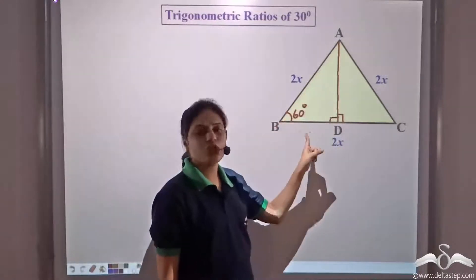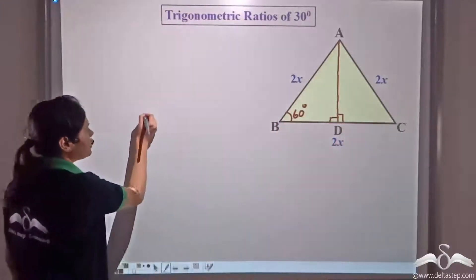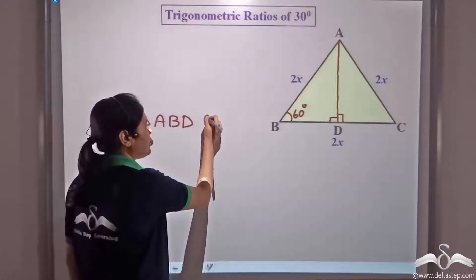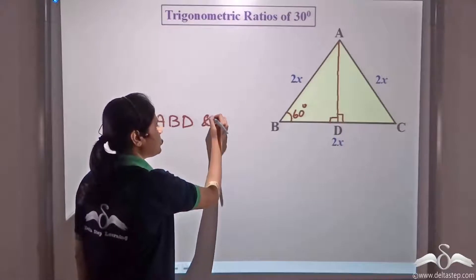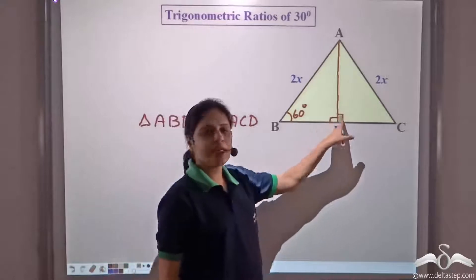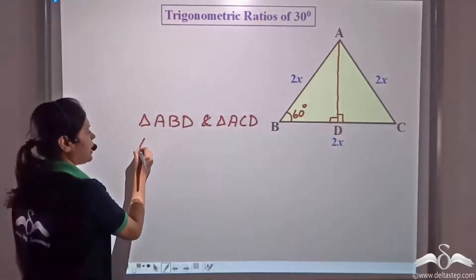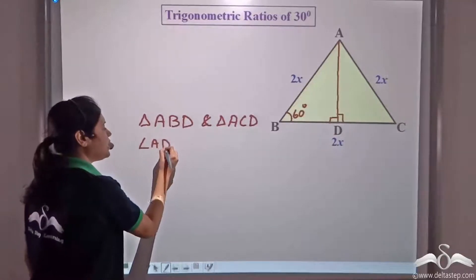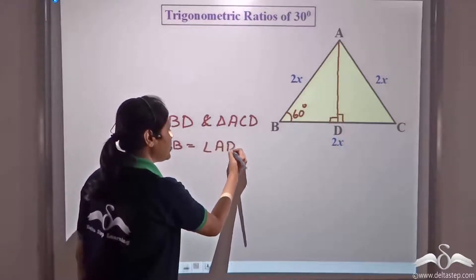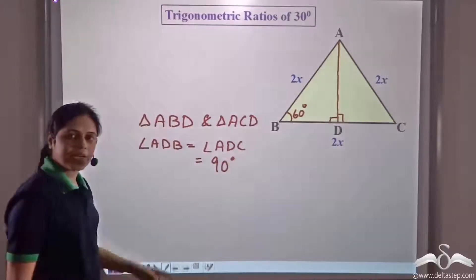If we consider these two triangles — triangle ABD and triangle ACD — angle D is a right angle in both. So angle ADB is equal to angle ADC, equal to 90 degree, giving us a right angle.